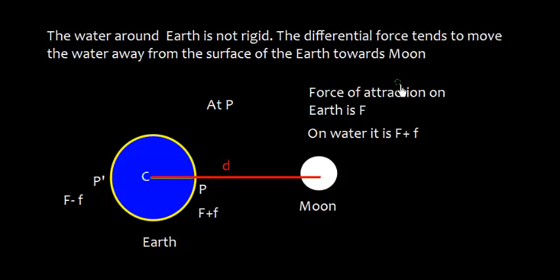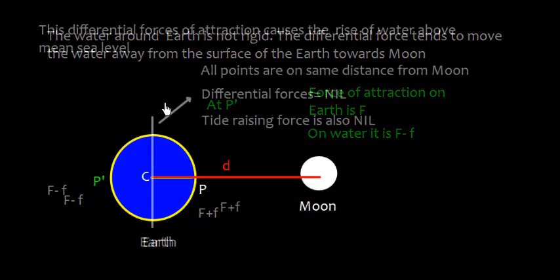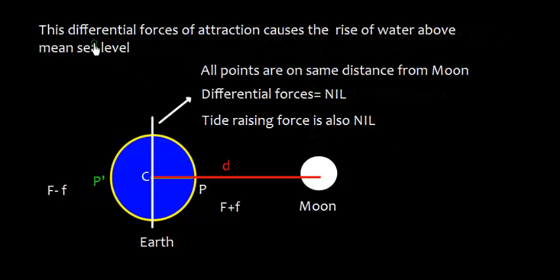So at point P, there will be force of attraction on earth that is F, and on water the force of attraction will be F plus f. Similarly, at point P', the force of attraction on earth is F, but on water it is F minus f.